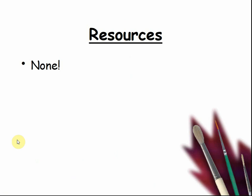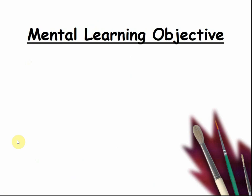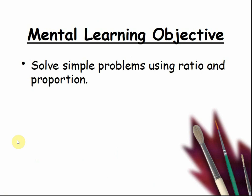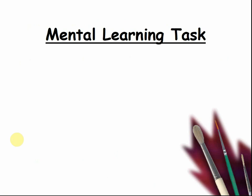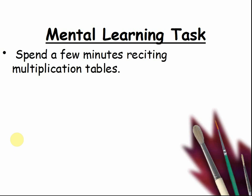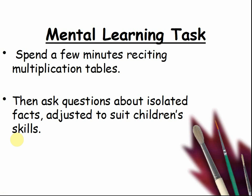We don't need any extra resources. The mental learning objective is: Solve simple problems using Ratio and Proportion. For the mental learning task, spend a few minutes reciting multiplication tables, then ask questions about isolated facts adjusted to suit children's skills. Pause the video and complete the task.